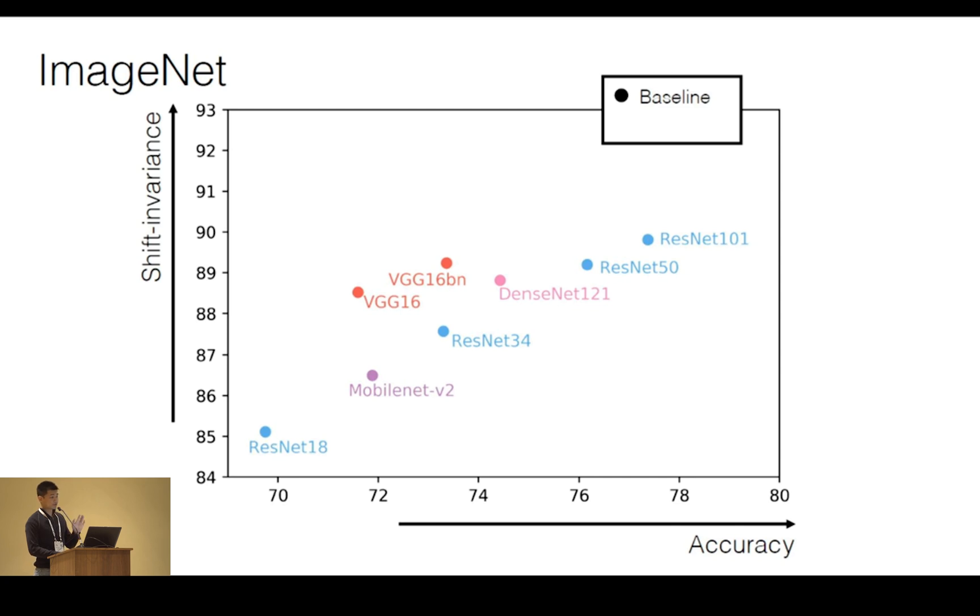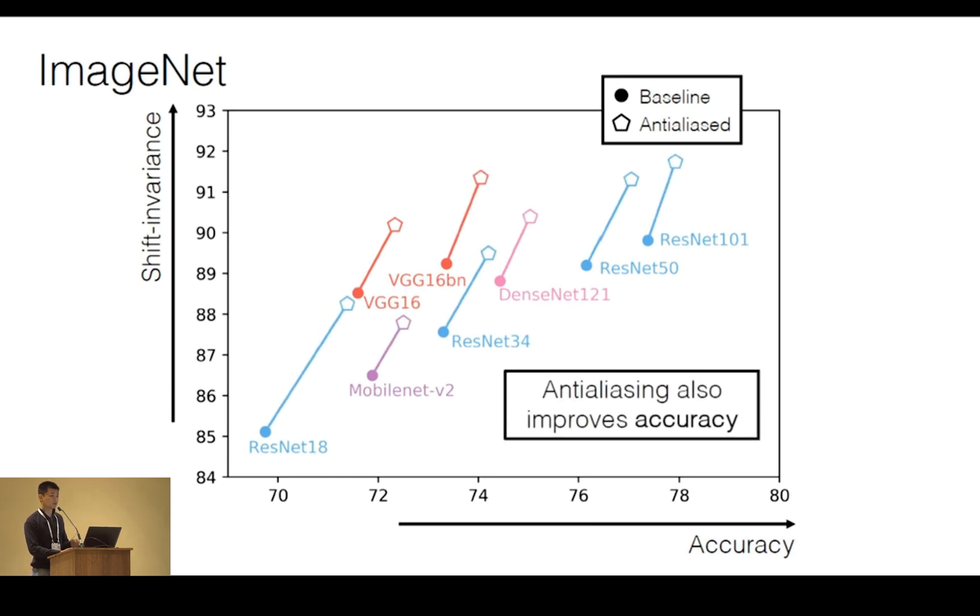Now, when anti-aliasing, before I ran this test, my expectation was that we would improve the shift invariance, but perhaps at a cost of accuracy. But I was surprised to see for VGG, we actually saw an improvement in both. And I ran this for all the other networks and saw a similar trend as well. So adding anti-aliasing not only improves the shift invariance, but it also improves the accuracy.